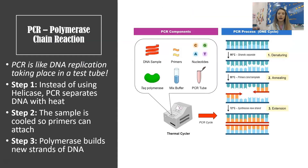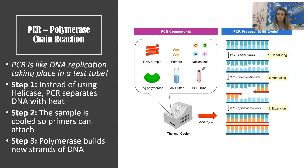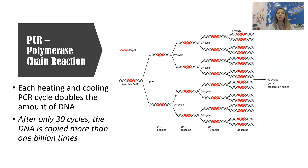PCR is like DNA replication taking place in a test tube. Instead of using the enzyme helicase, PCR separates the DNA using heat. Then the sample is cooled so that primers can attach to the separated DNA, and the enzyme polymerase is added to build complementary strands of DNA, just like it would in the nucleus. That heating and cooling process is repeated over and over.